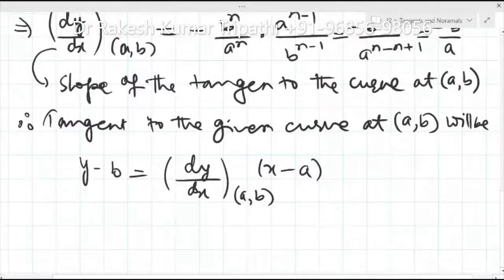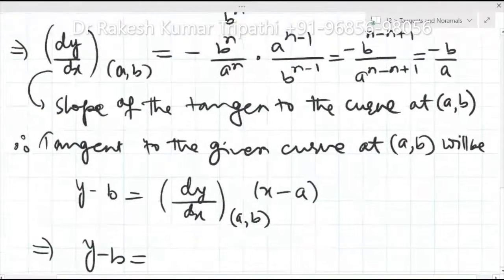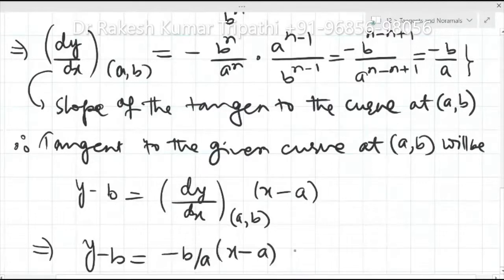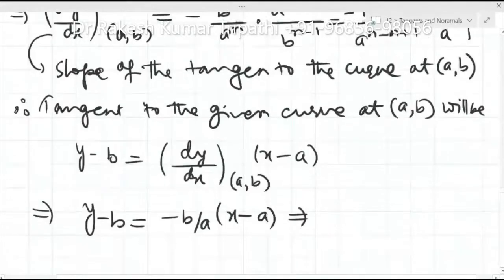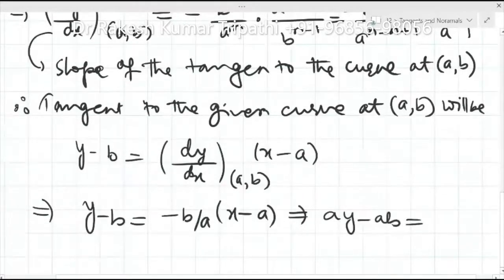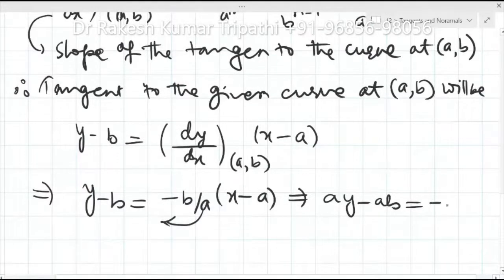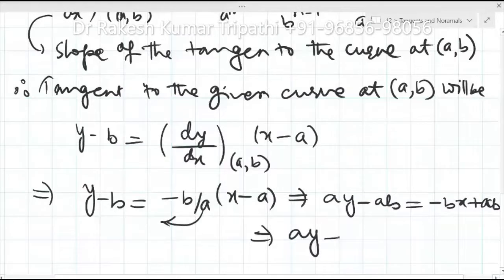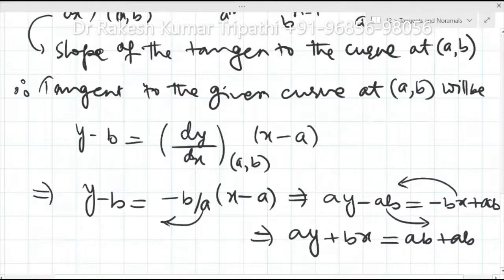Substituting the slope −b/a: y − b = (−b/a)·(x − a). Using cross multiplication, the left side becomes a·y − ab, and the right side expands to −bx + ab. Transferring terms: ay + bx = ab + ab = 2ab.